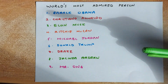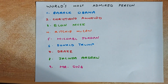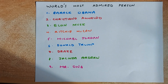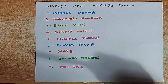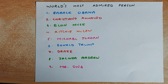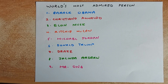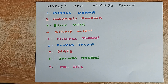For example, Barack Obama at number one, Cristiano Ronaldo at number two, Elon Musk the CEO of Tesla at number three, Richie McCaw the great All Blacks at number four, Michael Jordan the great basketball player of all time at number five, Donald Trump at number six, Drake a great musician at number seven, Jacinda Ardern the well-loved Prime Minister of New Zealand at number eight, and Mr. Ong at number nine just for fun.